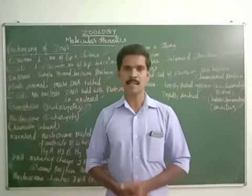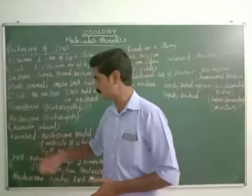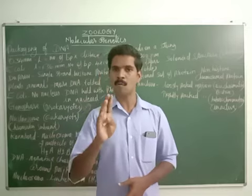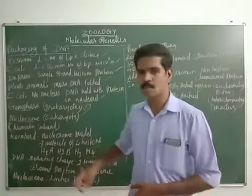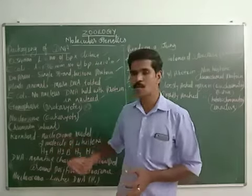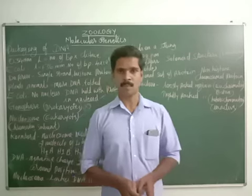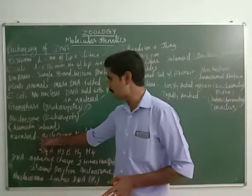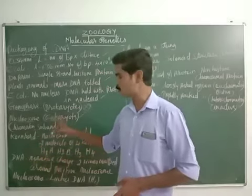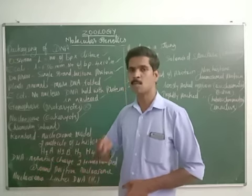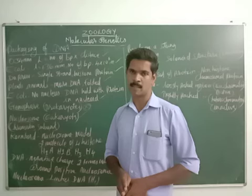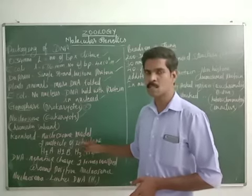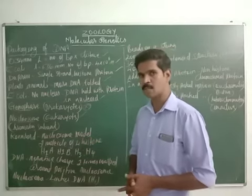Kornberg first introduced the structure of the nucleosome. According to Kornberg's model, the nucleosome is made up of two molecules of four histone proteins, so totally eight histone proteins are present in a single nucleosome. This is called the histone octamer.